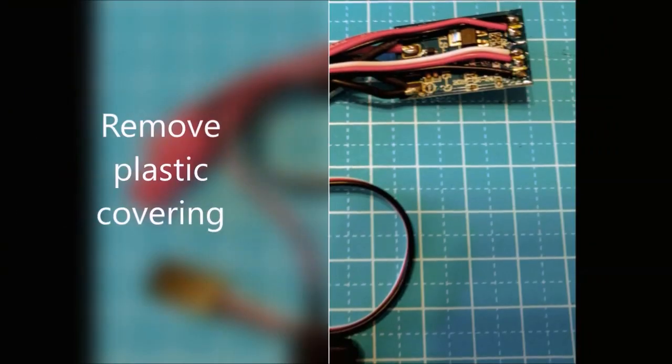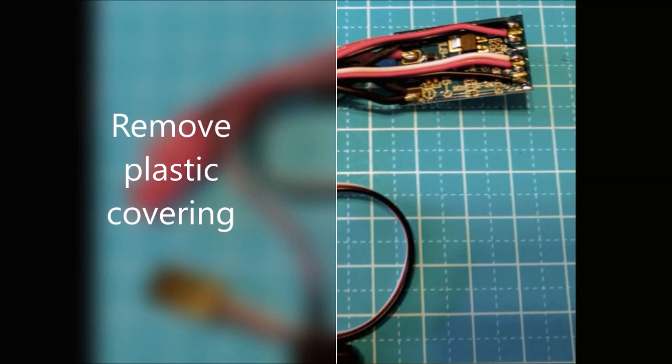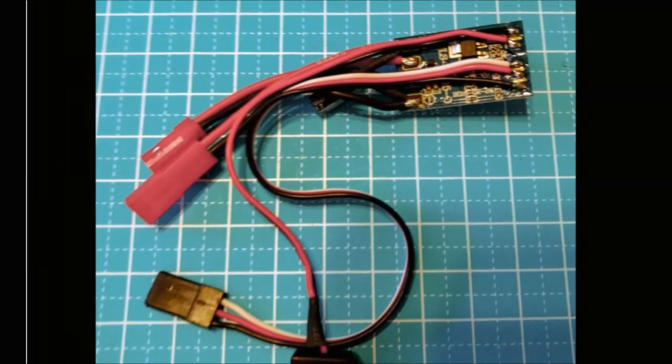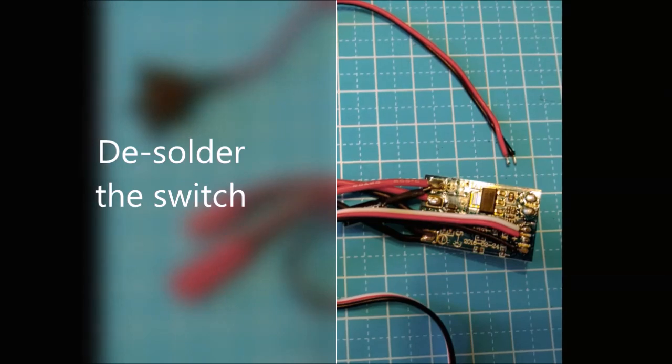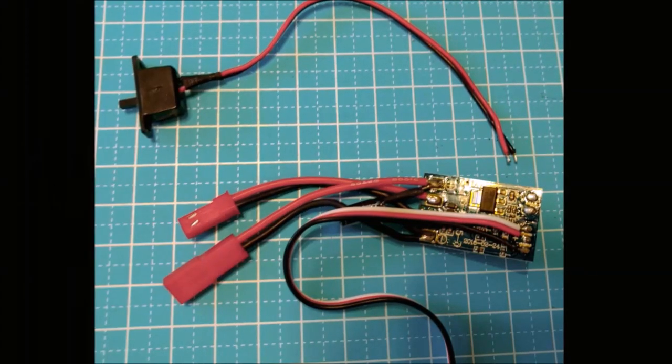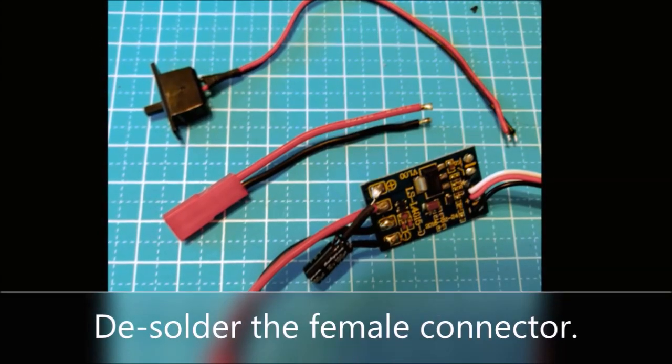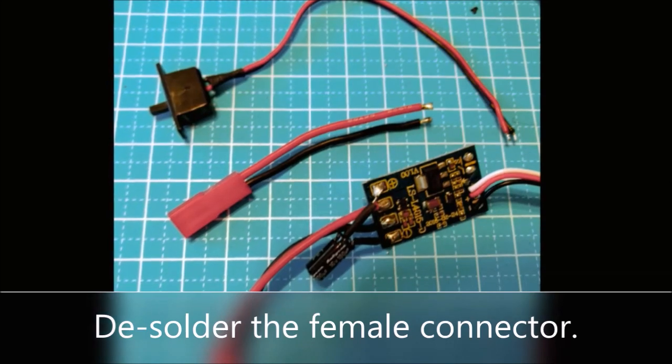So the first thing we're going to do is remove the plastic covering so we can access the different electronics. We're going to desolder the switch. We're going to use that later. We're then going to desolder the female JST connector. We're going to use that to plug in our motors.